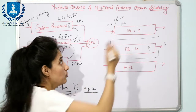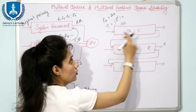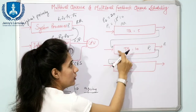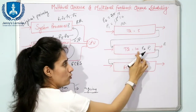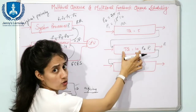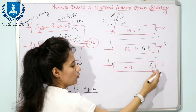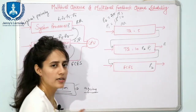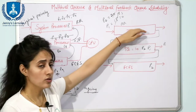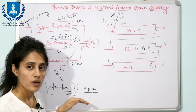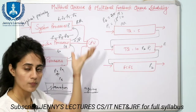Suppose process P2 arrives with burst time 20. It executes for 5 units in queue 1 and is demoted to queue 2 with 15 units remaining. In queue 2, it executes for 10 units and is demoted to queue 3 with 5 units remaining. Finally, P2 completes its execution in queue 3. This demonstrates how higher-priority processes are demoted to lower-priority queues, and lower-priority processes can be promoted upward.